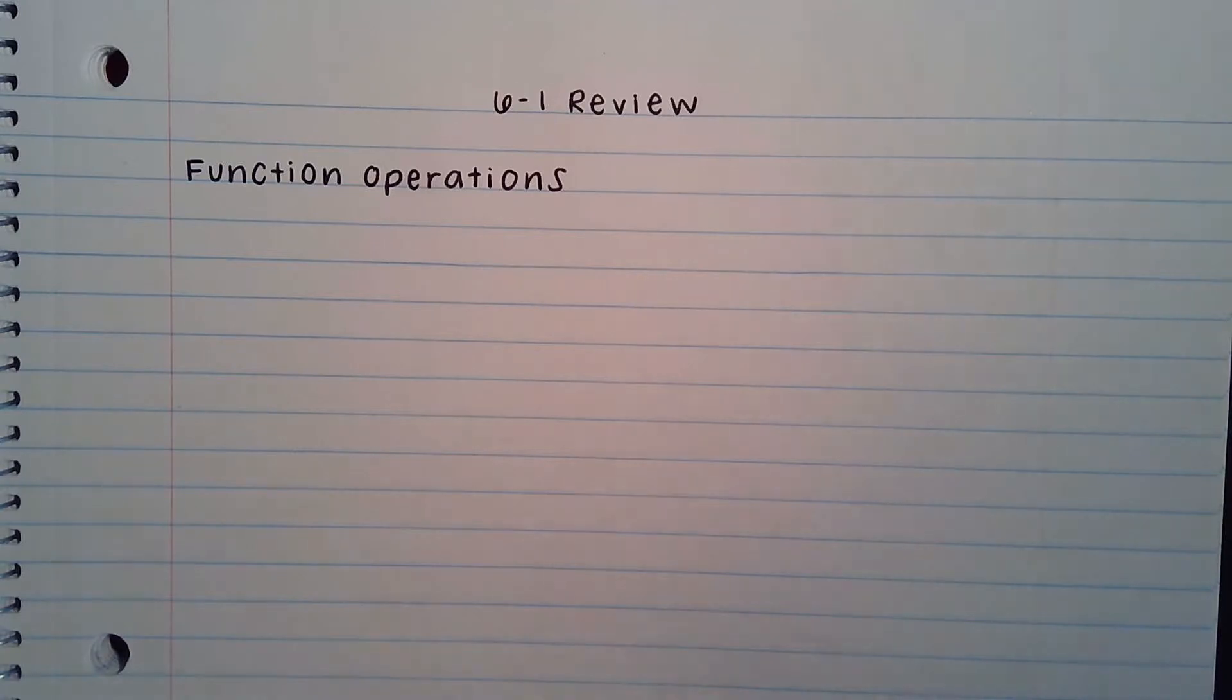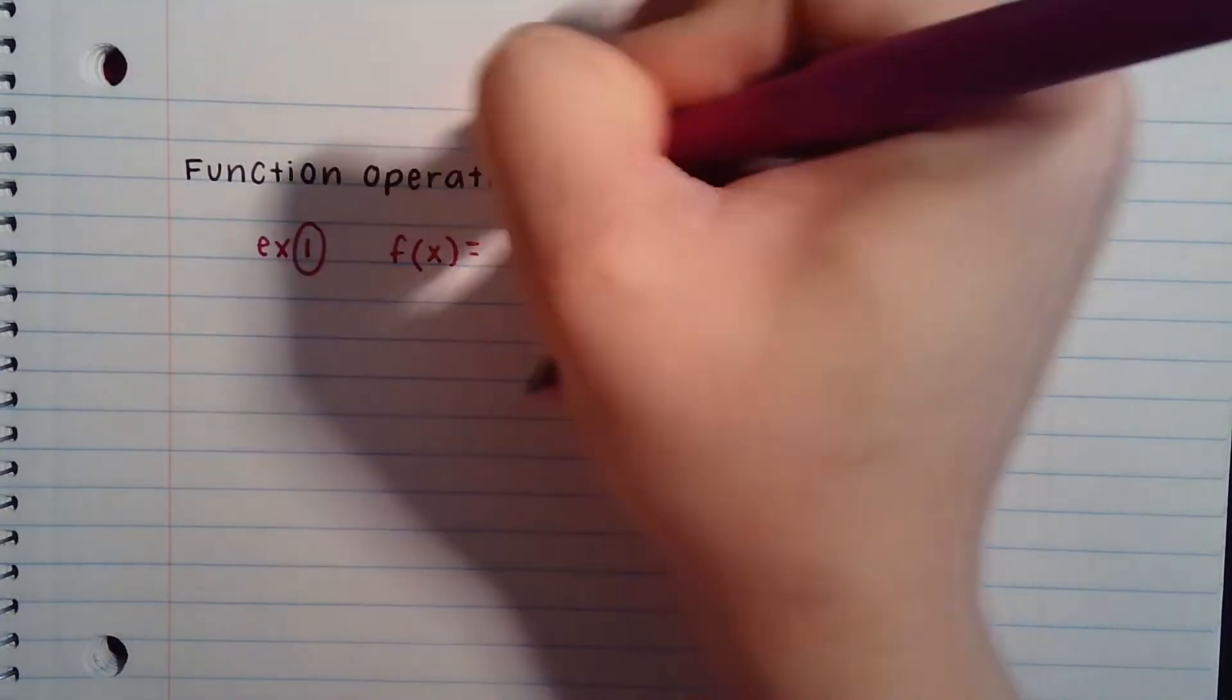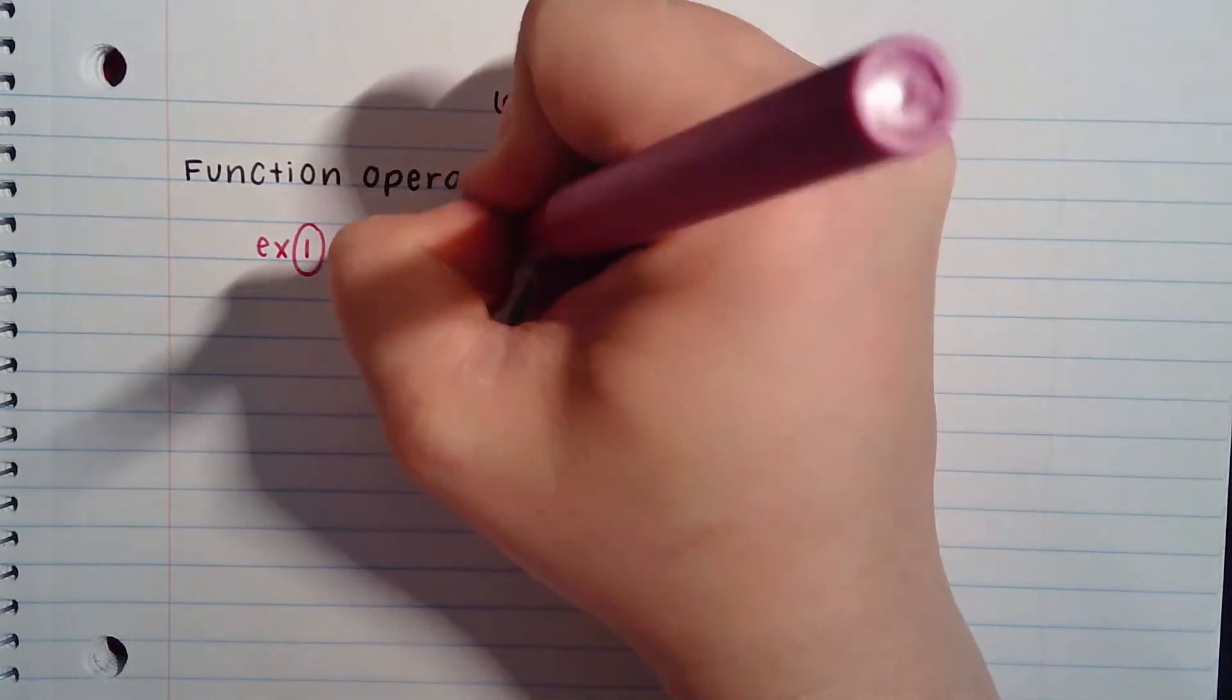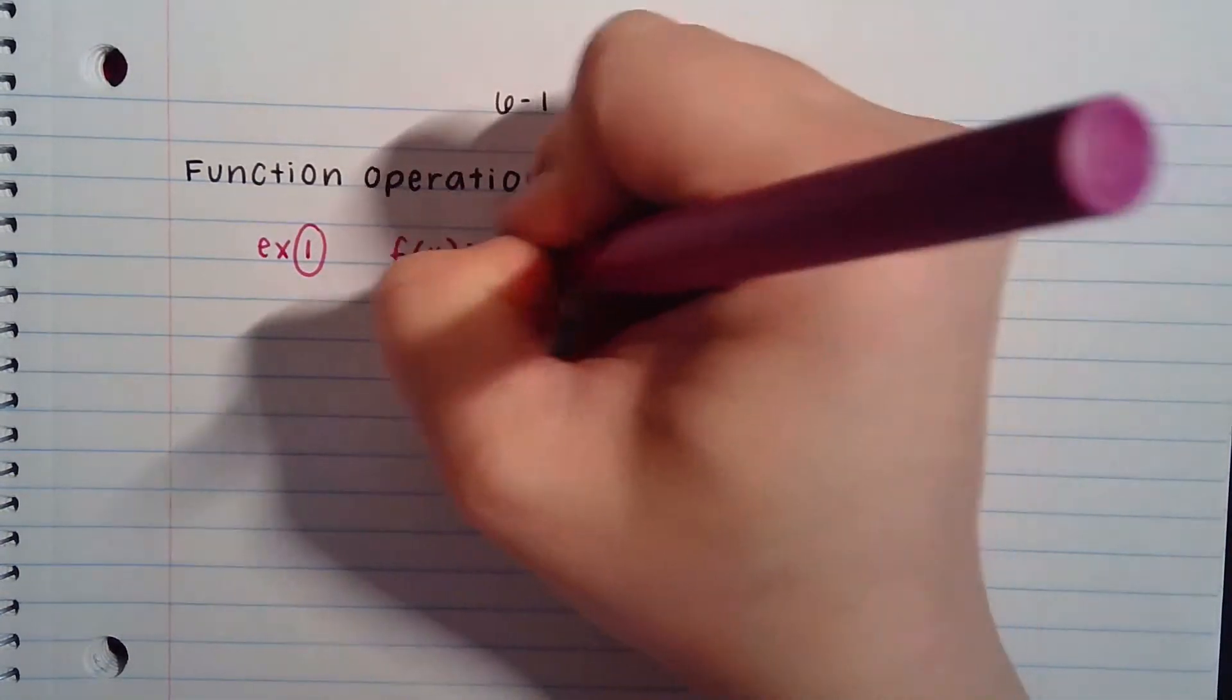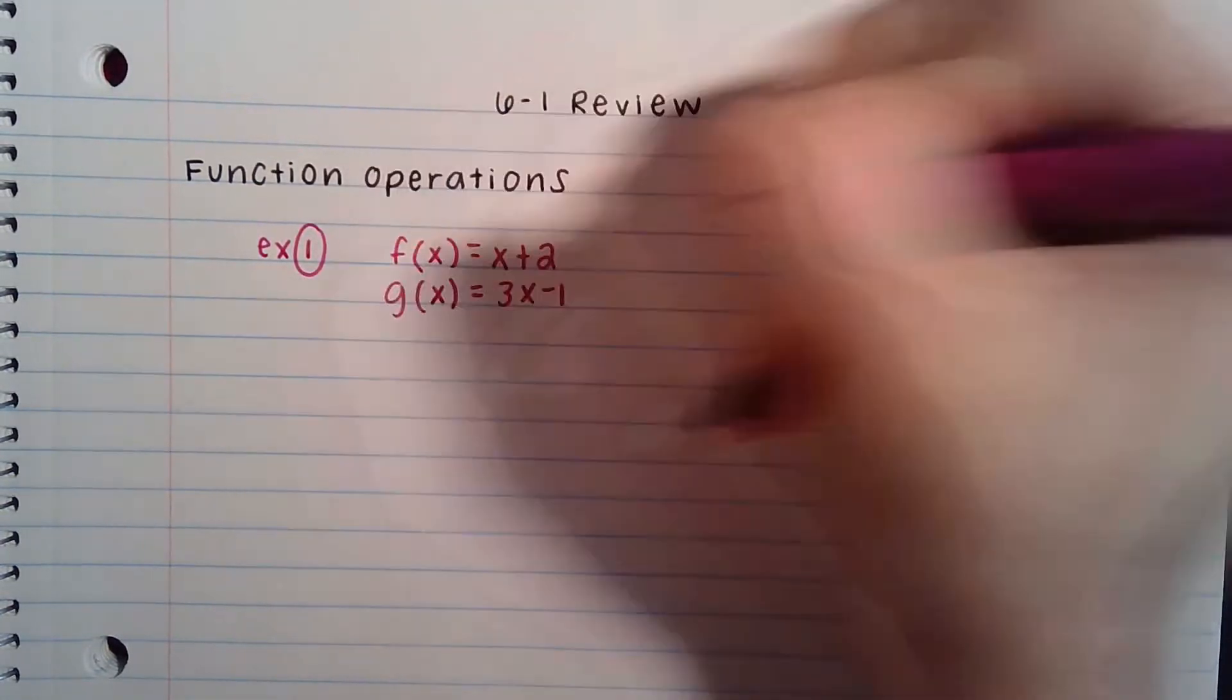So let's call this function f(x). We'll say f(x) is x plus 2. And we need a second function, so we'll call that g(x), and let's make that function 3x minus 1.